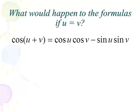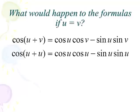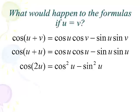Let's do the same thing for cosine of u plus v. We're going to let u and v be the same angle, and we end up with cosine u cosine u minus sine u sine u. So those are the same, and we end up with cosine 2u equals cosine squared minus sine squared. That's our second formula of the lesson.